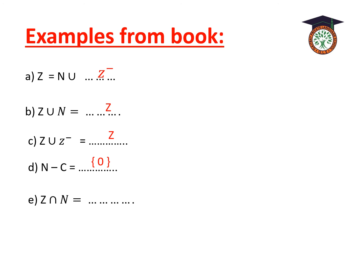The last example: Z intersect N. The intersection sign means we choose the common elements between the two sets. The common elements between Z and N are all of N, since N is the smallest set between Z and N. So the answer is N.